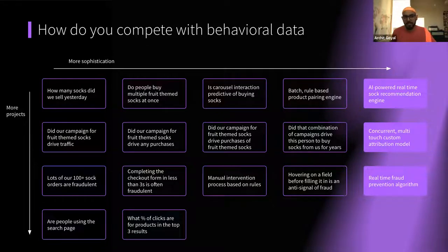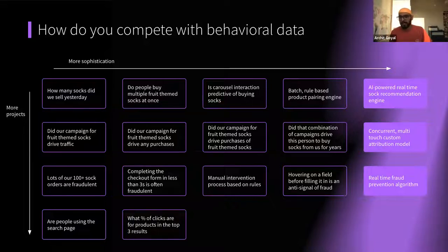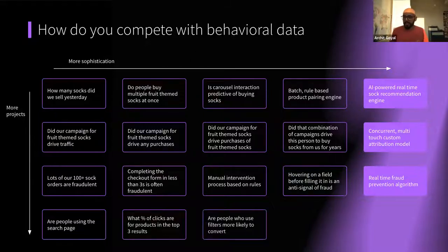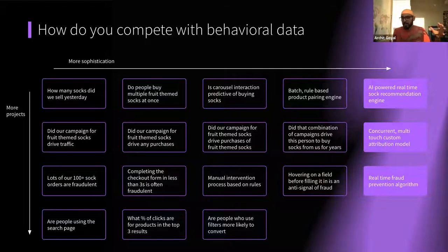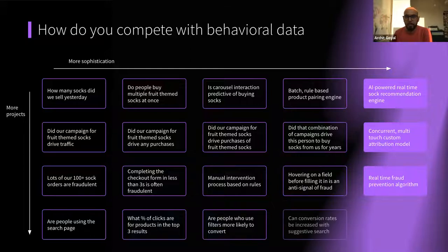Search behavioral data is heavily underutilized in e-commerce. What percentage of clicks are for products in the top three results? On a lot of e-commerce sites, you end up on page three, four, five, or six. Are at least 85% of clicks on those top three results? Looking at filters: a lot of e-commerce sites are effectively search experiences. Are people using certain filters more likely to convert? Should we be promoting certain filters or putting some presets on them to encourage conversion? And then obviously suggested search and personalization there.